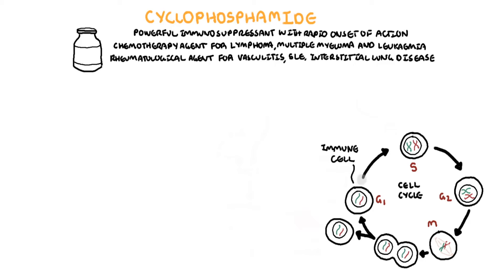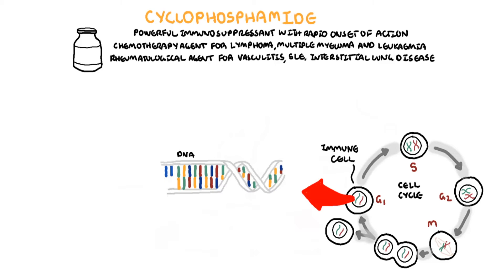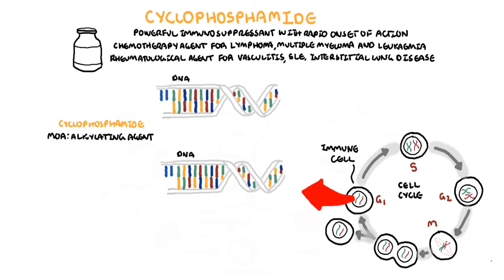Normally the immune cells enter the cell cycle to proliferate. The G1 phase prepares the cell to enter the S phase, where DNA is replicated. Cyclophosphamide, as an alkylating agent, works by attachment of alkyl groups to DNA bases — specifically guanine.